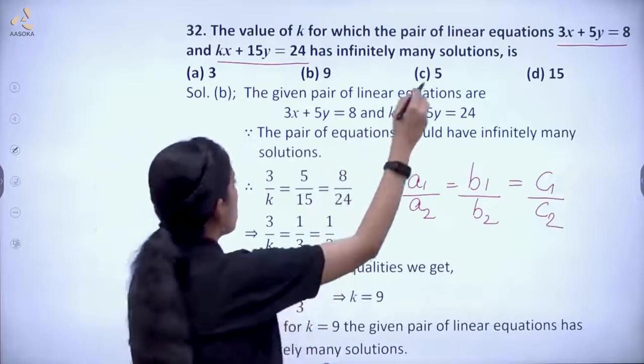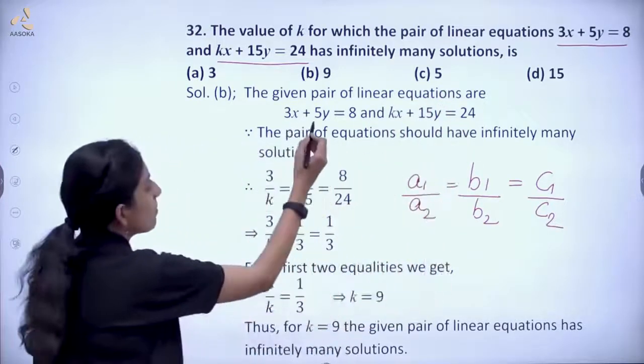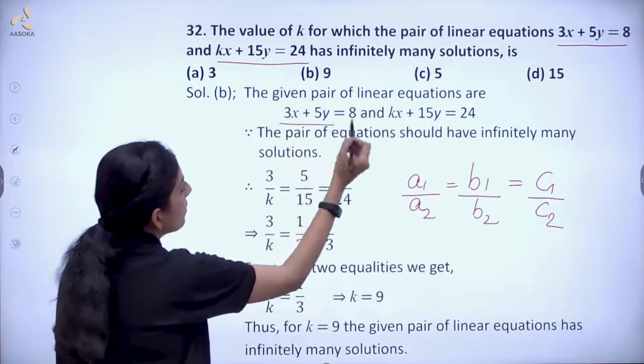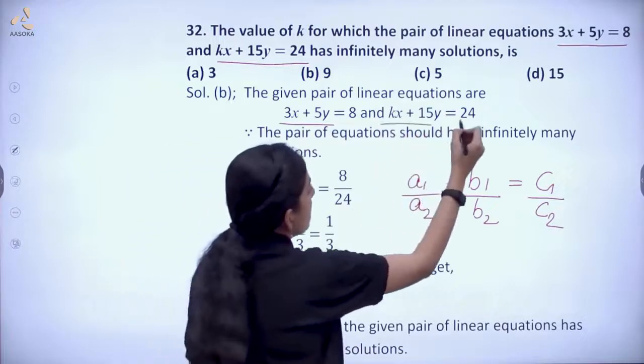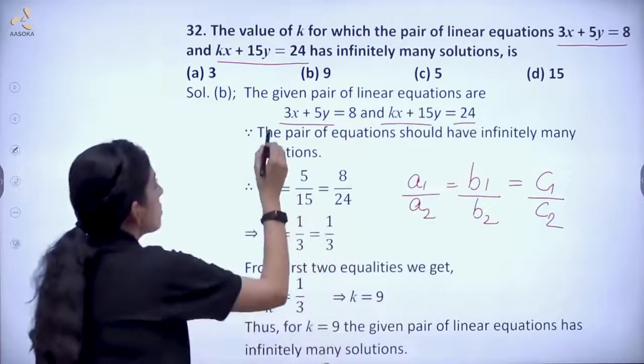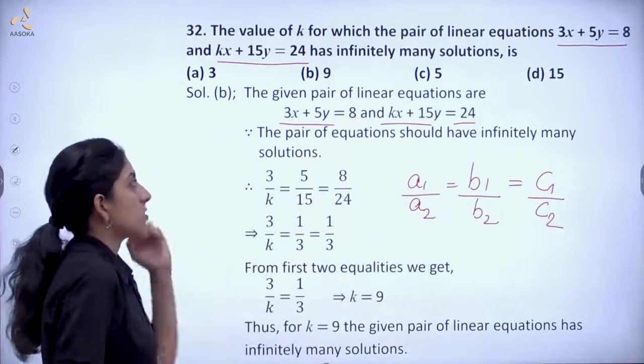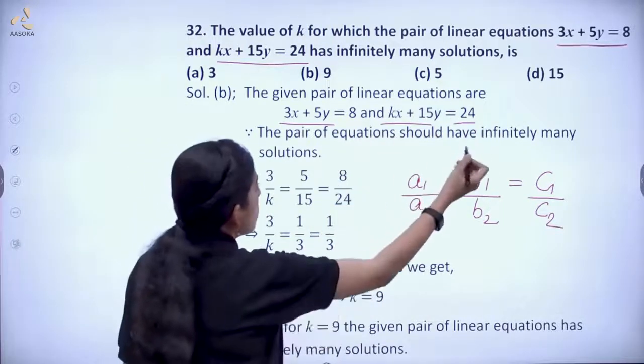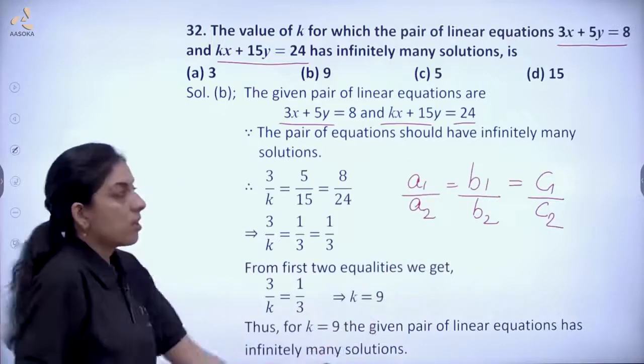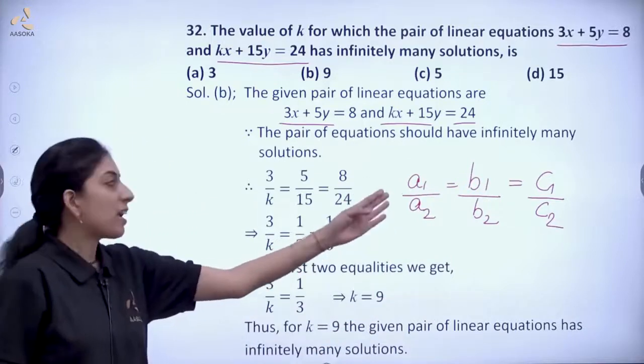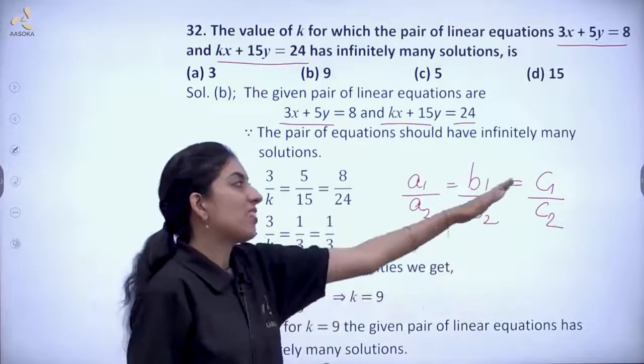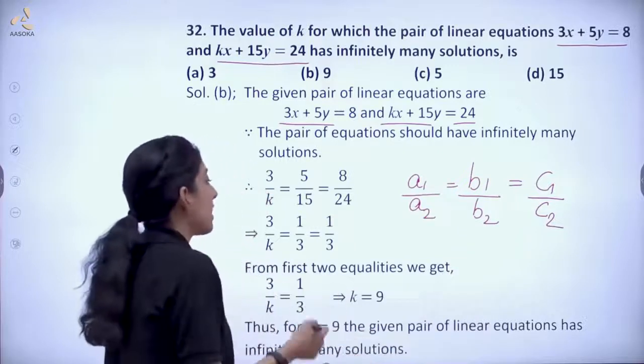Here we have two equations: 3x + 5y = 8 and kx + 15y = 24. The given pair of linear equations are these two equations. So for infinite solutions we have this condition. Let us substitute the values of a1, a2, b1, b2, c1, c2 and then calculate the value of k.